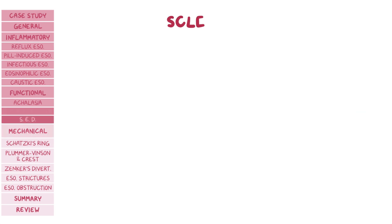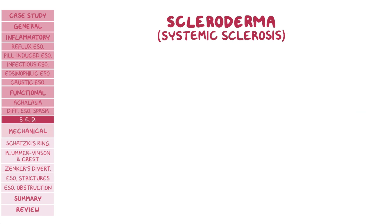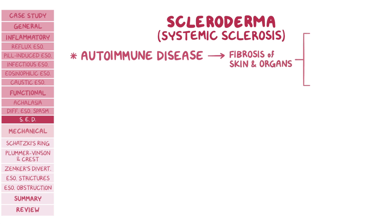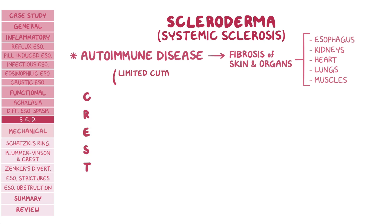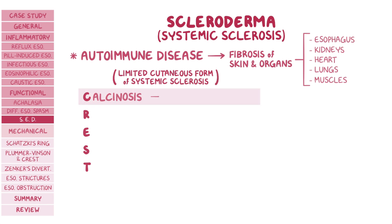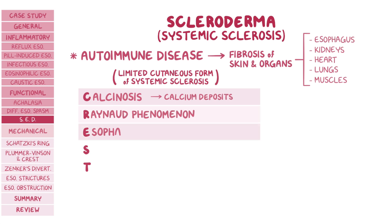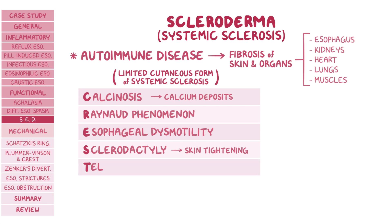The next disorder is scleroderma, or systemic sclerosis, an autoimmune disease where there is fibrosis of the skin and other organs, including the esophagus, kidneys, heart, lungs, and muscles. CREST syndrome, now called the limited cutaneous form of systemic sclerosis, is the less severe form of the disease. CREST stands for calcinosis (calcium deposits in soft tissues), Raynaud phenomenon, esophageal dysmotility, sclerodactyly (skin tightening), and telangiectasia (spider veins near the surface of the skin).